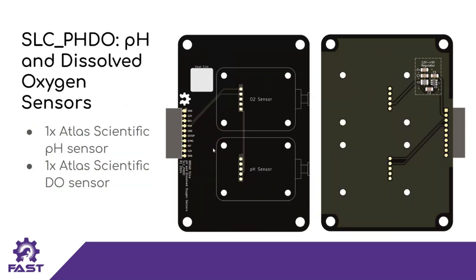This is a special slice: PHDO is a pH and dissolved oxygen sensor slice. You'll notice there's no Arduino on this slice, because we're using proprietary O2 and pH sensors from Atlas Scientific. They do their job really well and are quite expensive, but researchers might want to use them anyway. BREAD is a great framework for integrating I2C-enabled proprietary technology with an open source system.